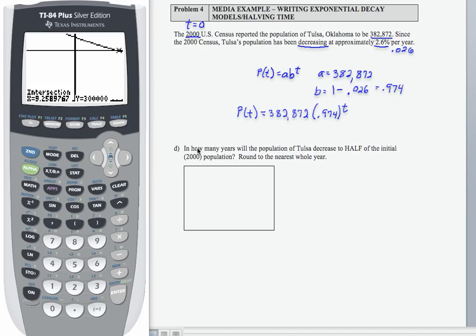Continuing this example with Part D, we're asked in how many years, so that is going to be T, will the population of Tulsa decrease to half of the initial 2,000 population?